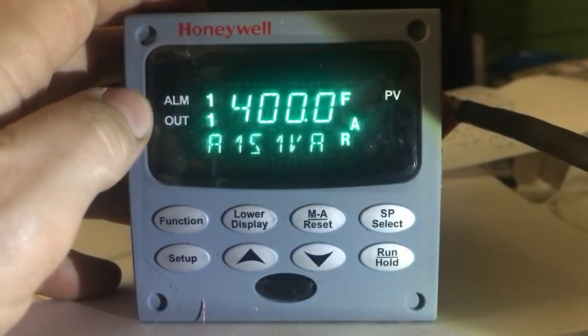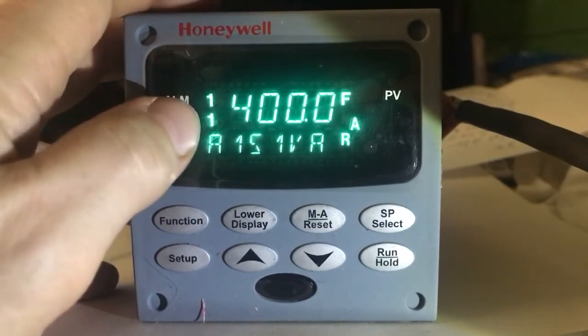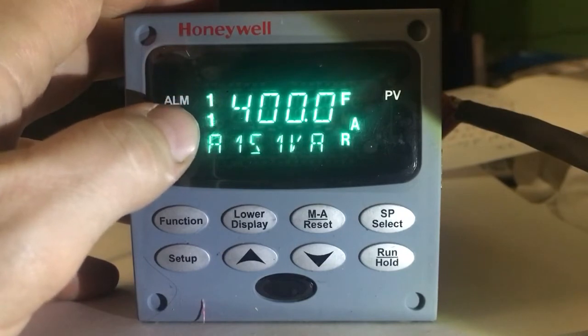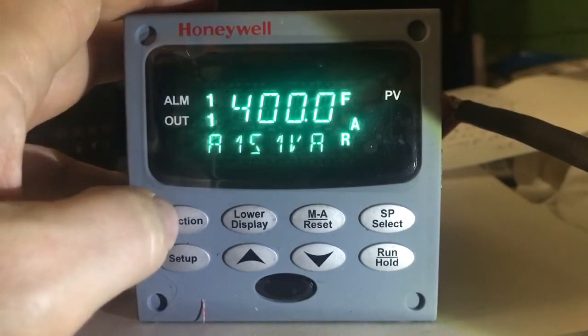That's under the alarm group, and it's the second function that you go through. It's the A1S1VR.